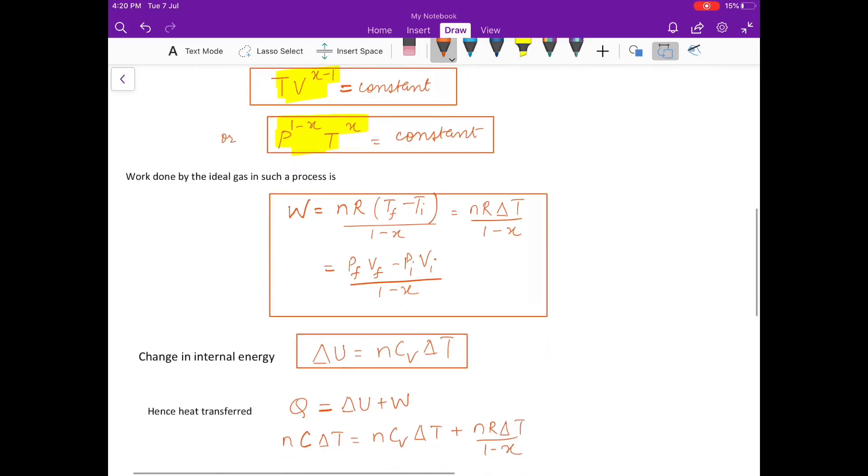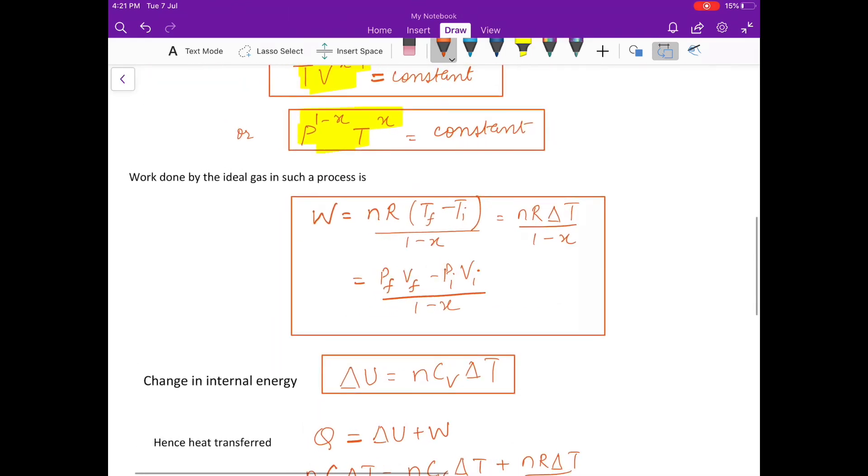Now, in such a process, what is the work done? If I calculate using integral PDV, I get the value of work as NR delta T upon 1 minus X. Delta T represents T final minus T initial. I can write it as NR delta T is delta PV for ideal gas. I can write it as P final V final minus P initial V initial upon 1 minus X. It is similar to the formula you learn for adiabatic work. You replace gamma by X.